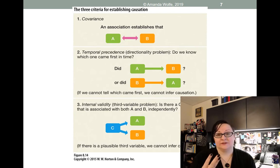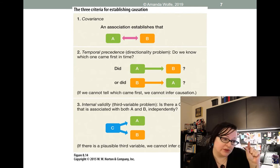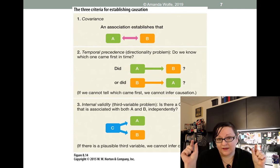The third thing is internal validity. And what this means is that you have tried to control for all of the other variables in the situation so that you know that when you just tweak this one over here, if this one changes, it's because you tweaked that one thing over there.